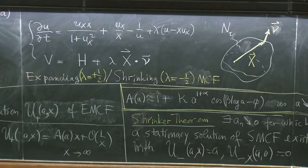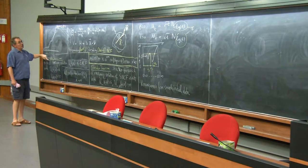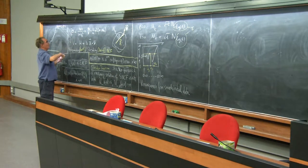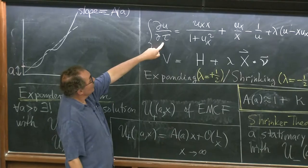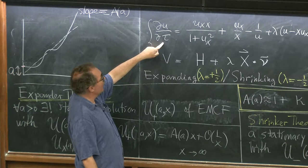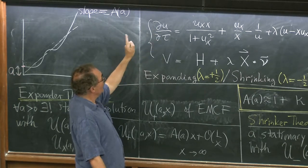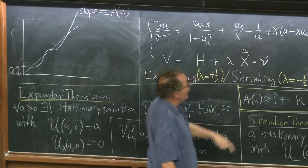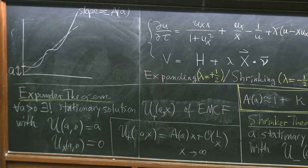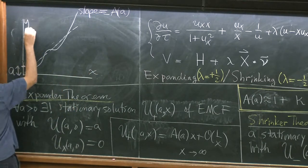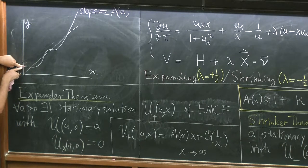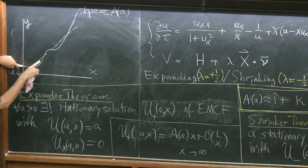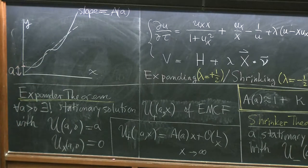The theorem about expanders: you can look for self-similar — that is, stationary — solutions to this equation, where you set the left-hand side to zero and set lambda equal to plus one-half. You get an ODE. The analysis shows that if you start at a certain shooting height A, there is always a unique local solution, and in the case of expanders the solution always extends. It is asymptotic to a cone with slope A.